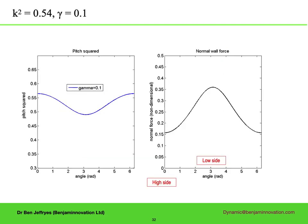Time to see what these solutions look like. Starting at k squared equals 0.54, which is where there is the maximum range of gamma with physical non-rotating solutions. On the left is the pitch squared. On the right, the normal side force, non-dimensionalized. Top of the hole is at the edges, bottom of the hole in the middle. As expected, the normal side force is a maximum on the low side, minimum on the high side. There is a small variation in pitch for this small gamma.